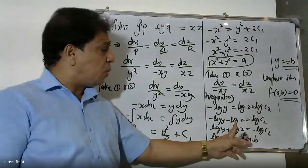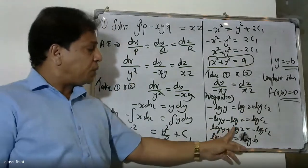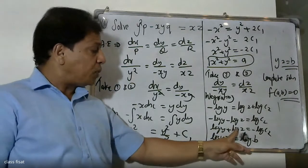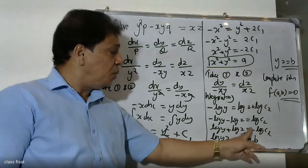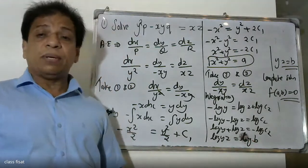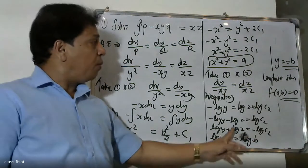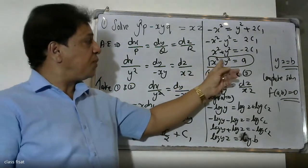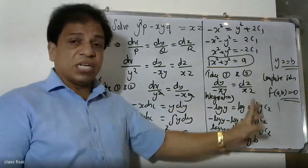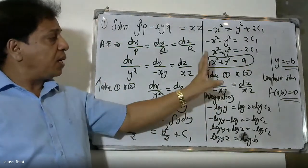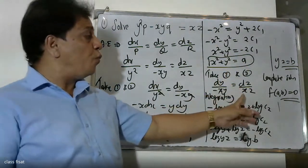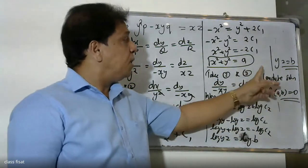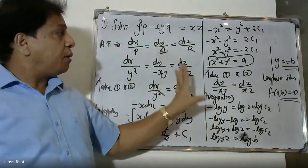Minus log y minus log z equals log c². Then log y plus log z equals minus log c². Using log ab rule, log yz equals log b, therefore yz equals b. The complete solution formula is f(a, b) equals 0, where a equals x² plus y² and b equals yz.